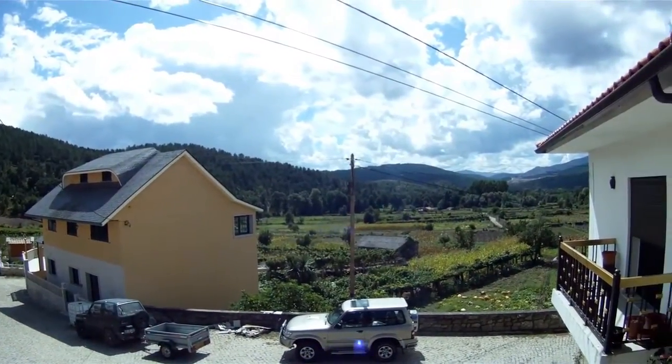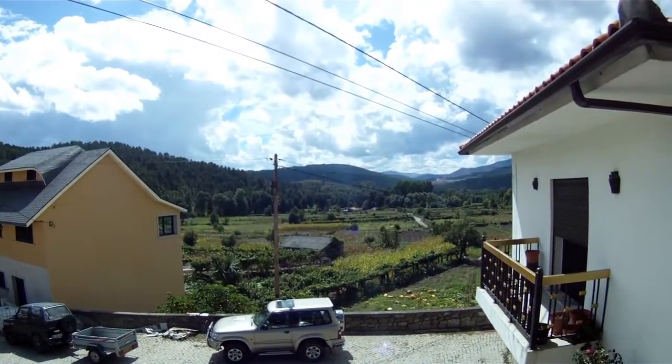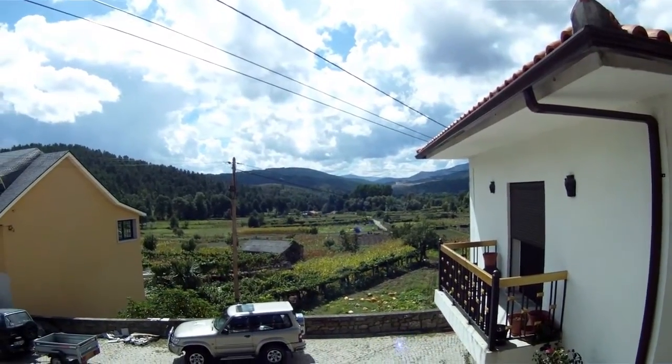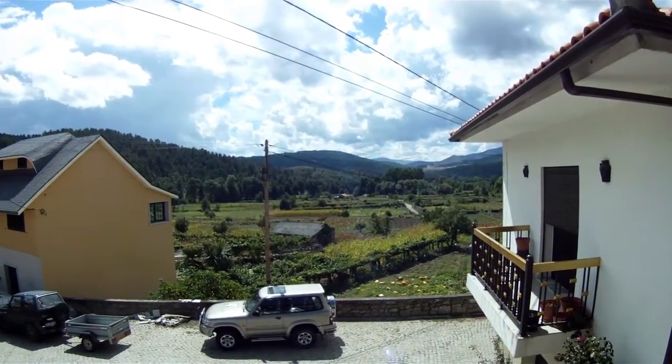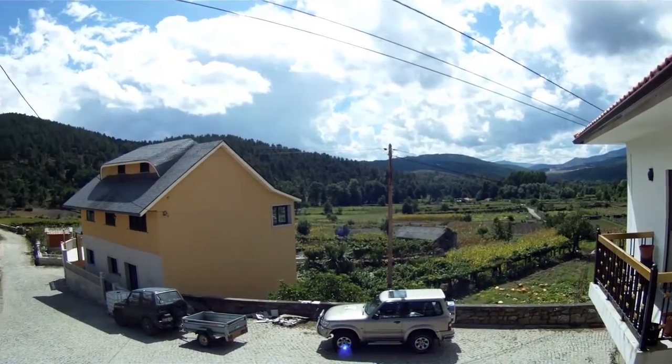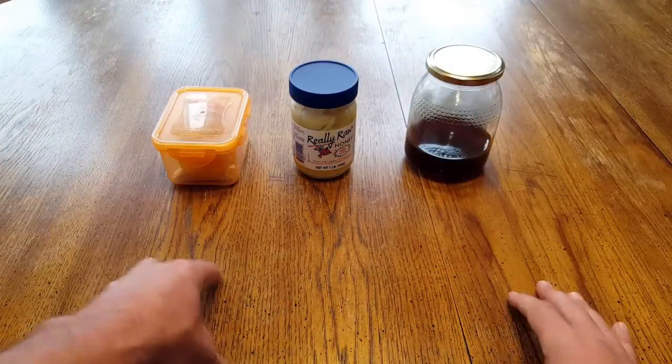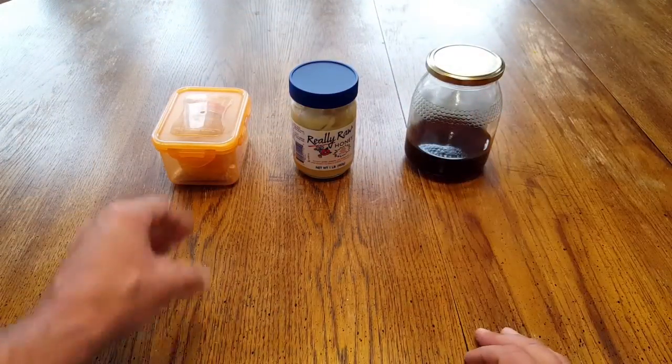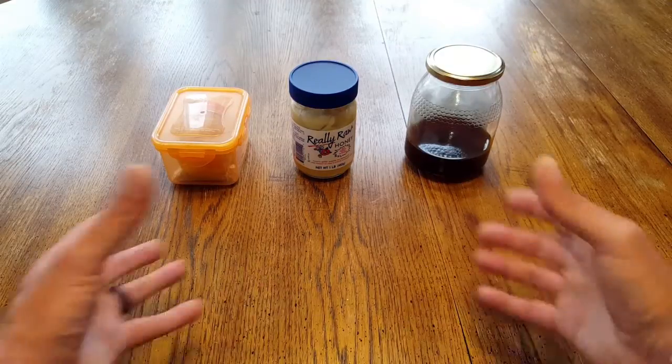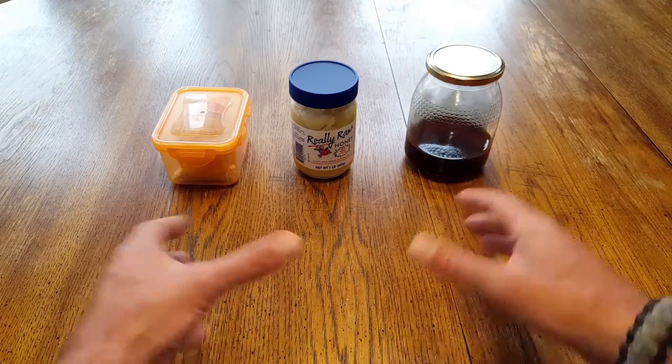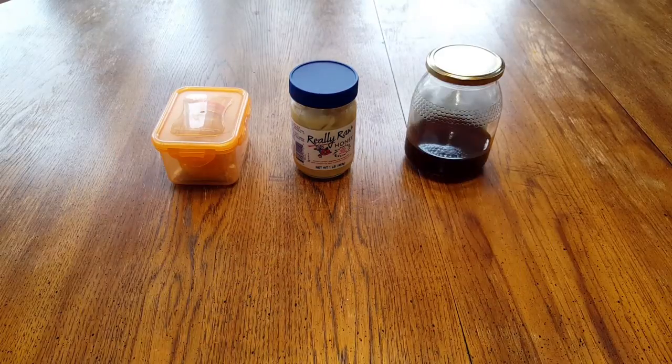This honey here is actually from Portugal from my neighbor who's a beekeeper. You could tell it really all depends on what the bees are actually feasting on with the pollen and everything like that to make the certain type of honey. And that's why some is darker, some is lighter. The way that it's processed or not processed is also going to contribute to the factor.